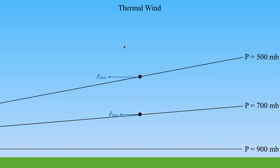Remembering our definition of geostrophic balance — the Coriolis force balances out the pressure gradient force — that means the Coriolis force must also be getting stronger with height. And since a stronger Coriolis force implies a stronger wind, as we go up toward stronger pressure gradient force and stronger Coriolis force, our wind must also be intensifying. This implies that we have vertical wind shear: our wind is changing speed and/or direction as we go up in the atmosphere.